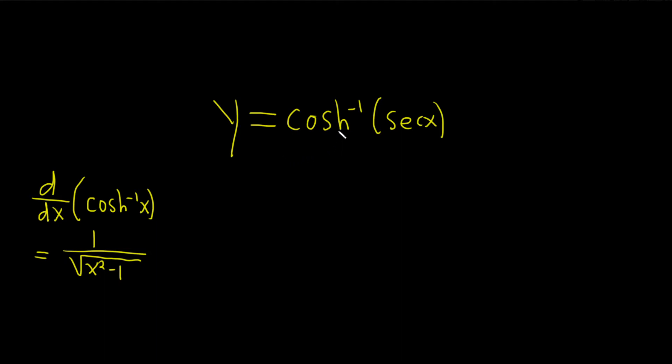So here we have to use the chain rule. We'll take the derivative of the outside, so we'll use this formula, and then we'll leave the inside untouched, and then we'll multiply by the derivative of the inside. That's the chain rule.